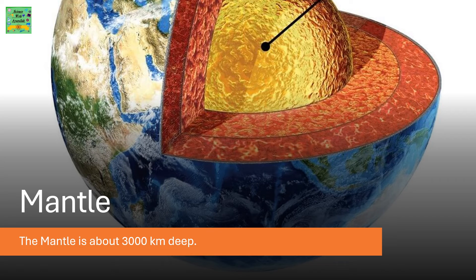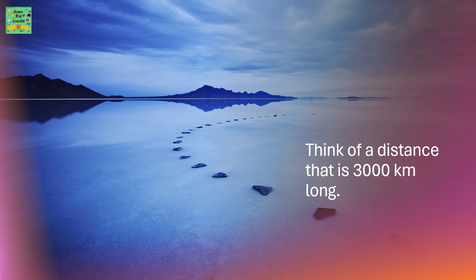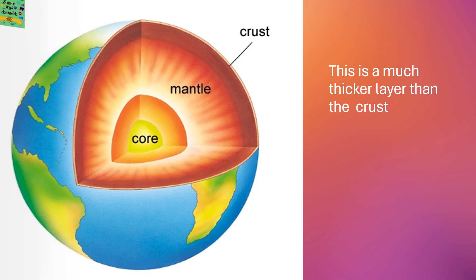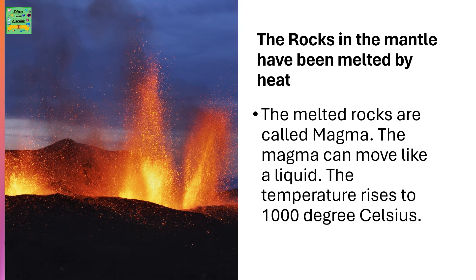The mantle is about 3000 km deep — think of a distance that is 3000 km long and that is the thickness of the mantle. The mantle is a much thicker layer than the crust. The rocks in the mantle have been melted by heat; the melted rocks are called magma. The magma can move like liquid, and the temperature rises to 1000 degrees Celsius.